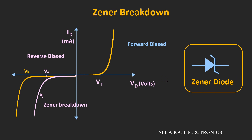But there are some diodes which are meant to be used in this breakdown region, and this diode is known as the Zener diode. In this Zener diode, the breakdown mechanism is different from the avalanche effect, and this breakdown mechanism is known as the Zener breakdown effect. Let us understand what exactly happens in this Zener breakdown effect.